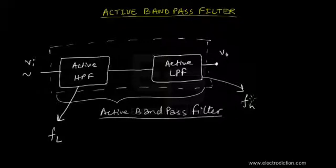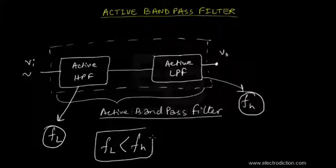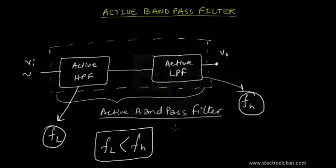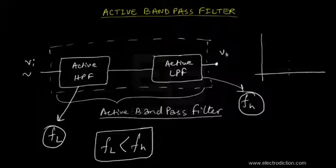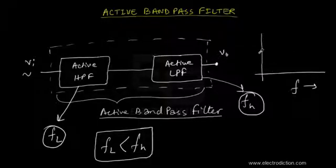It is always a necessary condition to construct a bandpass filter: the upper cutoff frequency of the active low pass filter must be greater than the lower cutoff frequency of the active high pass filter. Only then can we obtain a common band — a common range of frequencies — that both filters allow to pass. With this we can plot the gain along the frequency axis.